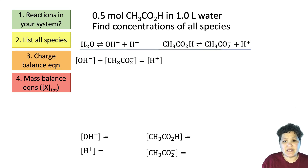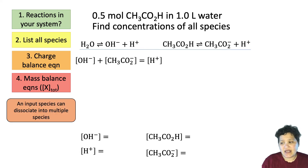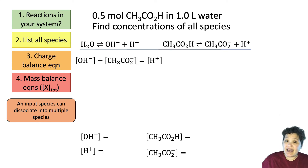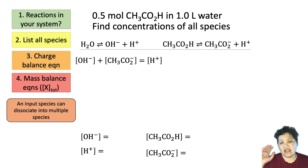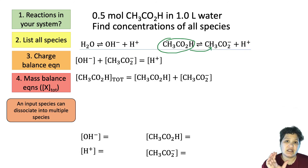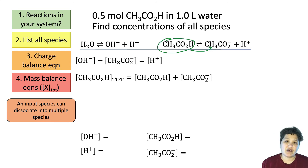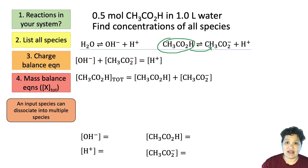Now we write mass balance equations. There are two possible types, and one is that an input species can dissociate into multiple species. We've only put in acetic acid — can that dissociate? Yes it can. So the total acetic acid concentration equals the concentration of protonated acetic acid plus the concentration of the acetate ion (the conjugate base), and that has to add up to the total we put in: 0.5 molar.